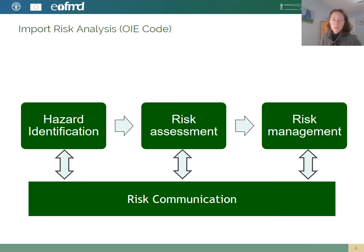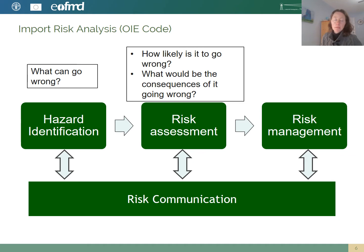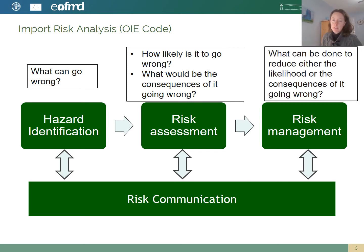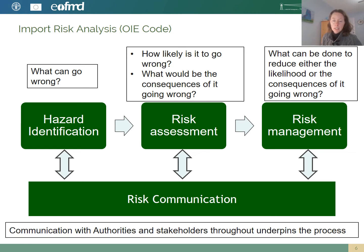In the OIE code, an import risk analysis framework is provided that consists of four steps. First, there's hazard identification, which addresses the question of what can go wrong. Next, there's risk assessment, which describes how likely it is to go wrong and what would be the consequences. Next, it's risk management, which identifies what can be done to either reduce the likelihood or the consequences of it going wrong. And all of this is underpinned by risk communication, which would happen between the authorities and stakeholders throughout the entire process.